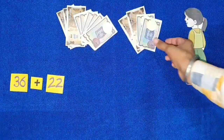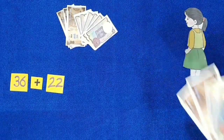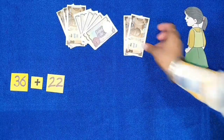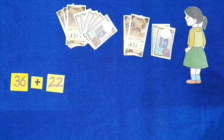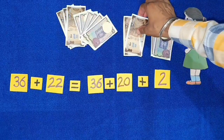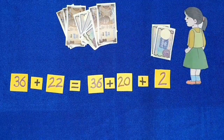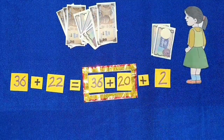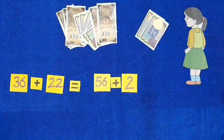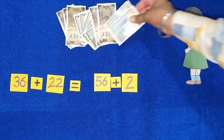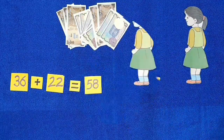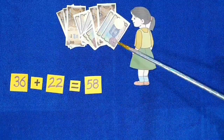In the second method, we split 22 as 20 and 2. 36 rupees and 20 rupees will make 56 rupees. 56 rupees and 2 rupees will make 58 rupees. Here also Harman has 58 rupees.